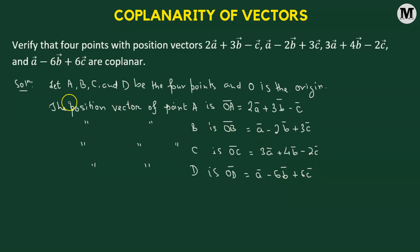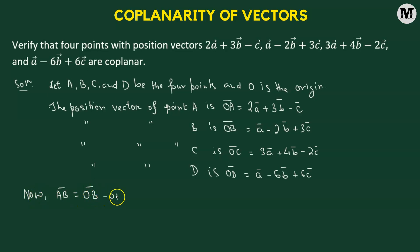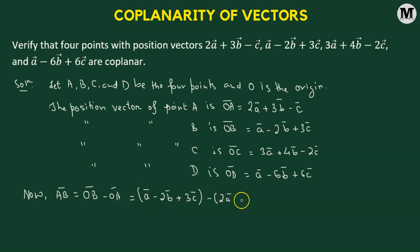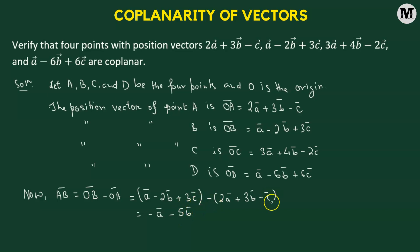Our goal is to show that the four points A, B, C, and D are coplanar. First, let's find the vector AB. AB = OB - OA = (a - 2b + 3c) - (2a + 3b - c), which gives us -a - 5b + 4c.